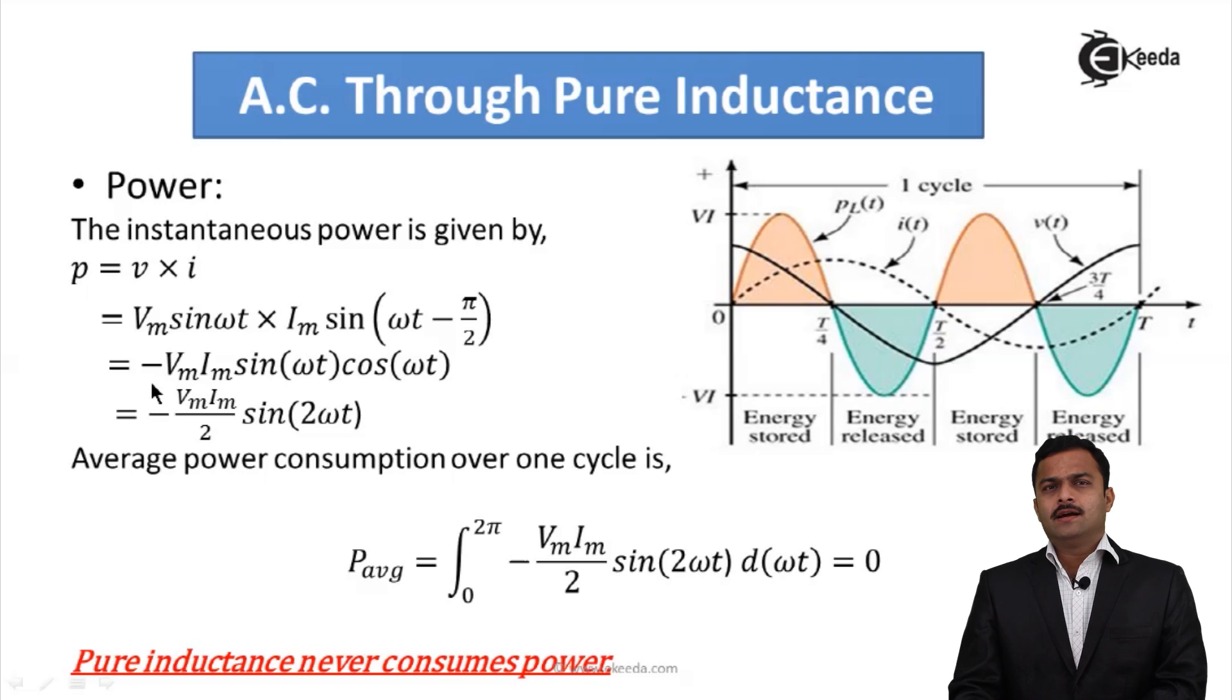If I solve, I will get minus Vm Im into sin ωt into cos ωt, because sin(ωt - π/2) is nothing but cos ωt. If I multiply it by 2 and divide it by 2, this term 2 sin ωt into cos ωt is sin 2ωt. So ultimately, instantaneous power is minus Vm Im by 2 sin 2ωt. It is a perfectly sinusoidal quantity I am getting.